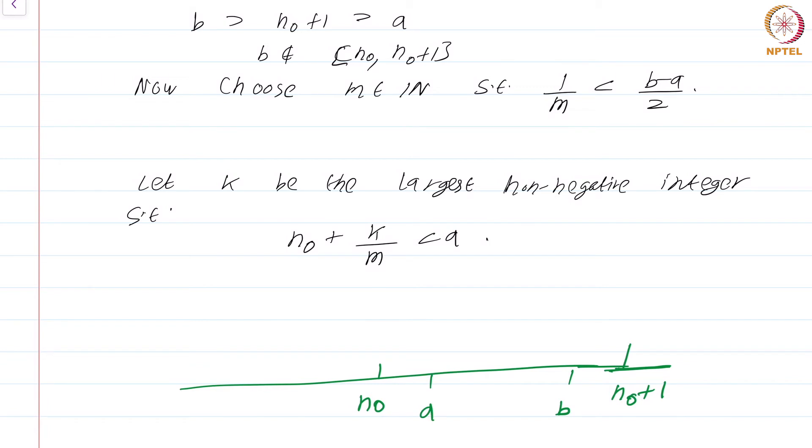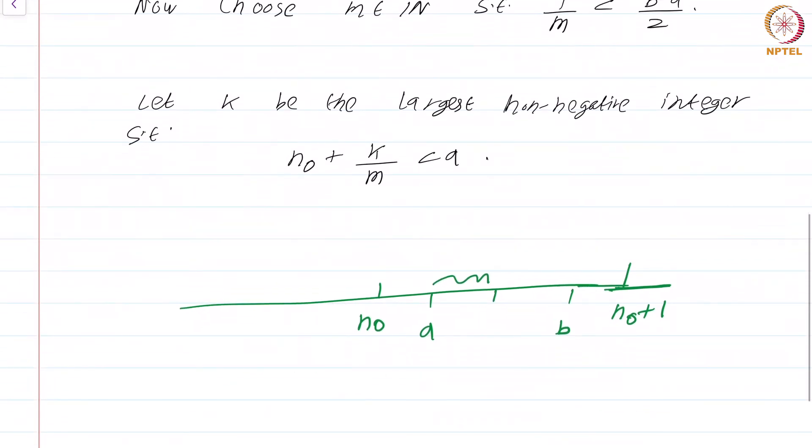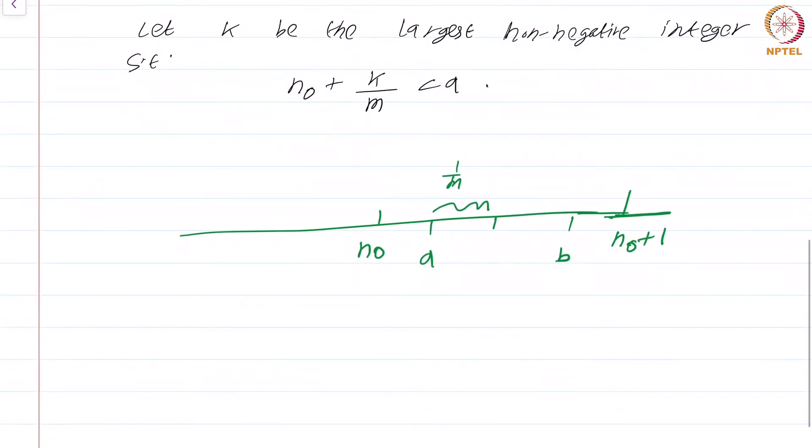What we have done is we have chosen (b-a)/2, that is exactly half this length, and then we are choosing a natural number so large that 1/m is less than half the size of this interval (a,b).